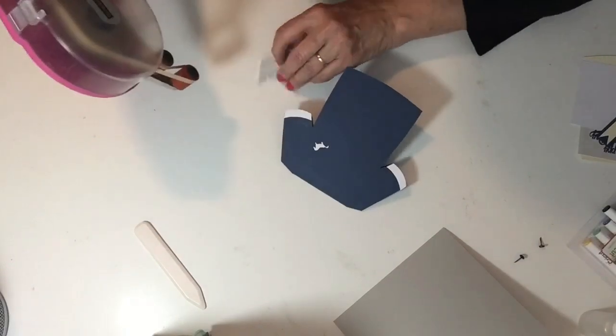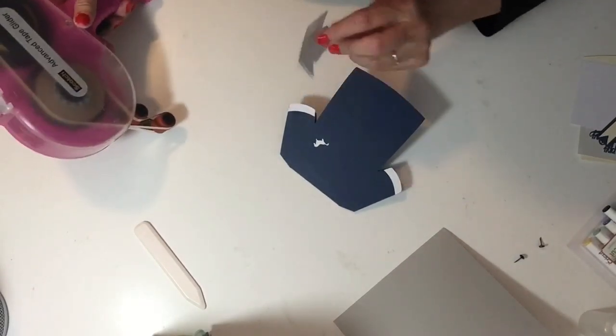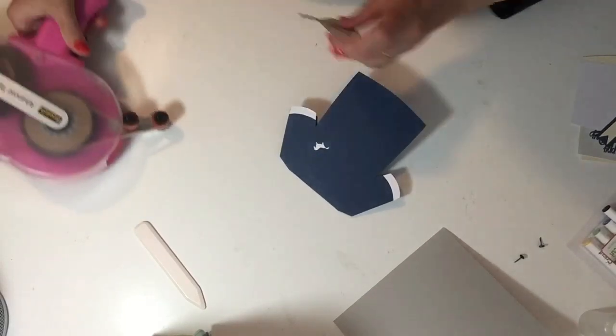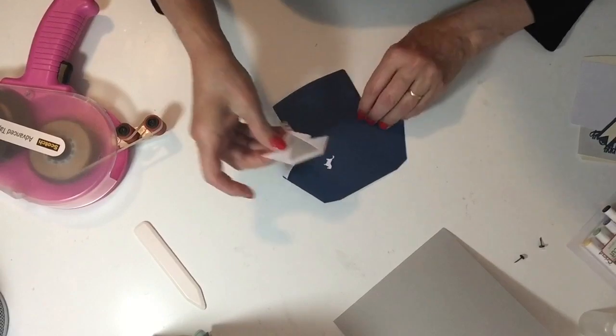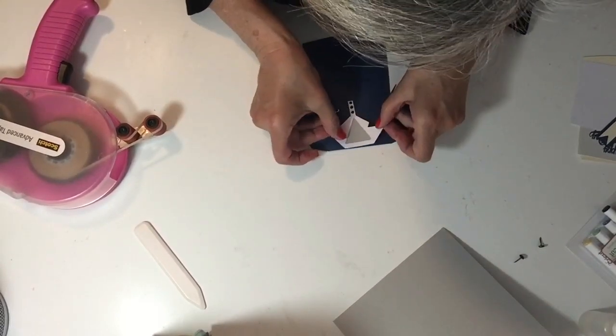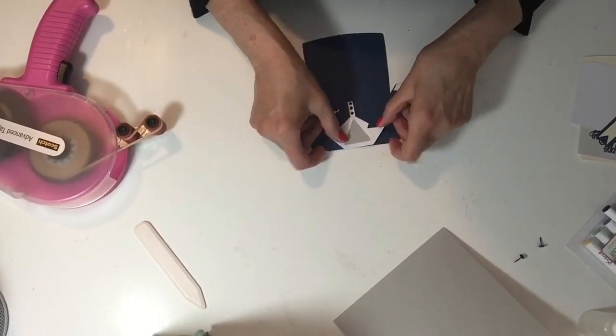So let's just put this on. I should be using glue, liquid glue on the smaller pieces, but because I'm messy with liquid glue I've decided to use my tape runner for this demo.